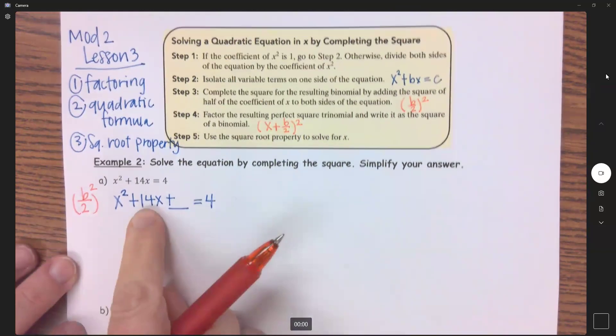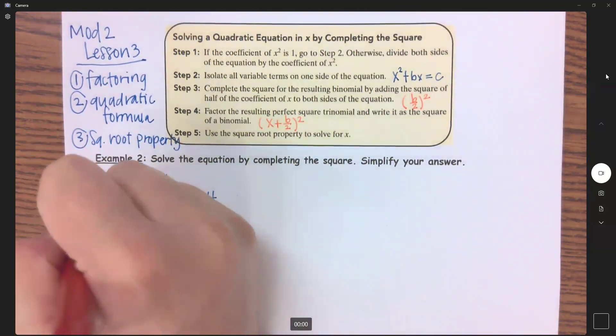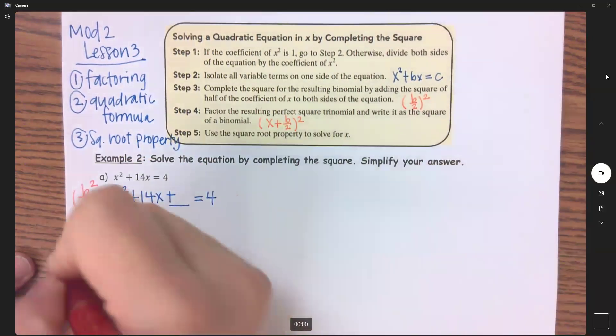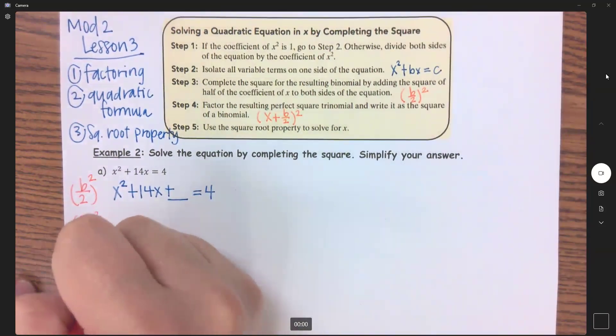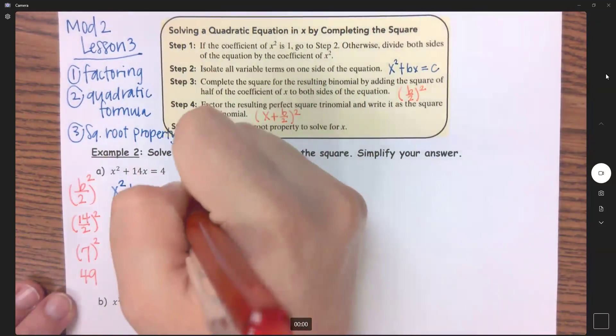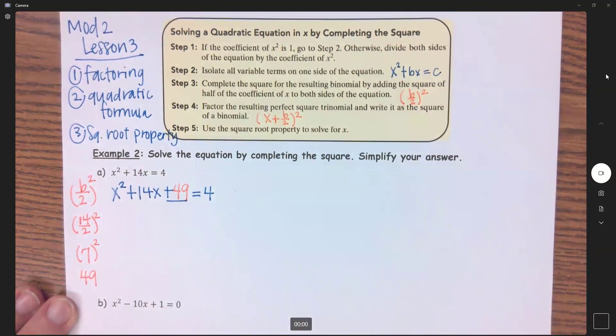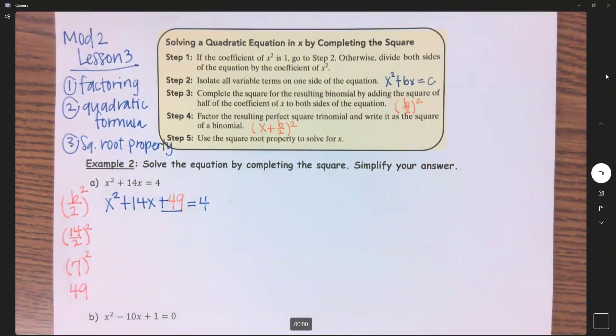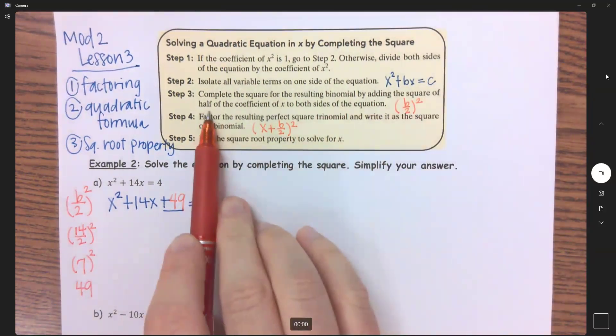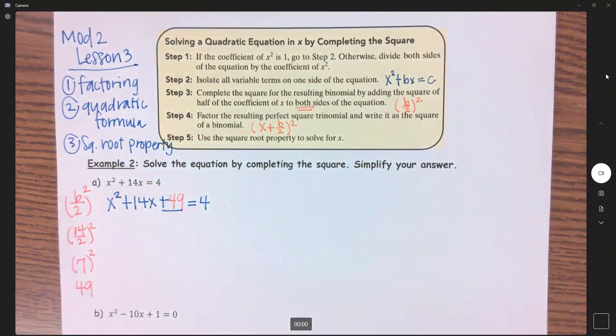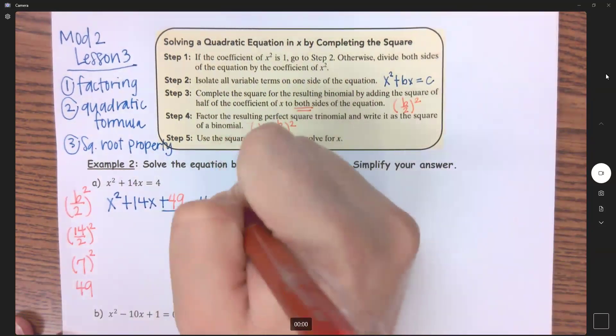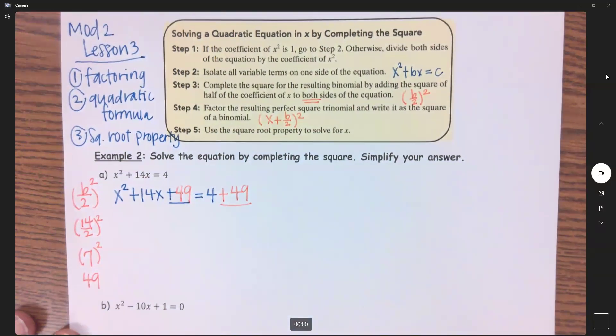My b is this 14. So I have 14 ÷ 2 squared, which gives me 7², which will give me 49. So I'm adding in 49 right here. Now, solving equations 101 says what I do to one side, I have to do to the other side. And so that's why it says we need to add this to both sides of the equation. So I am also going to add in 49 on that side.